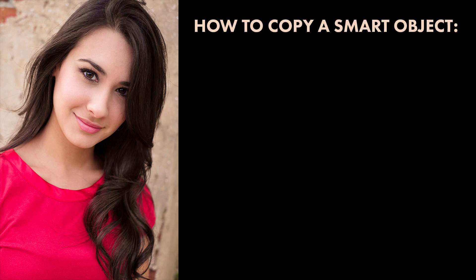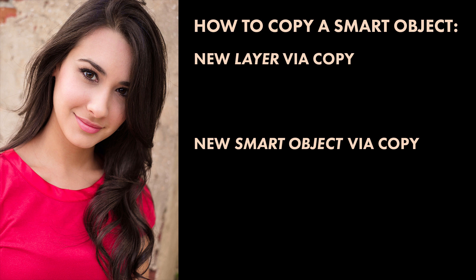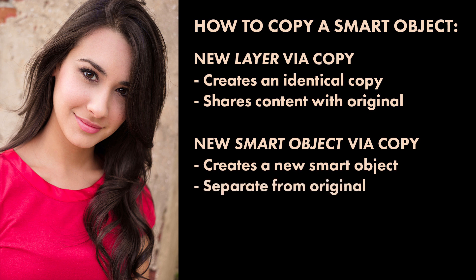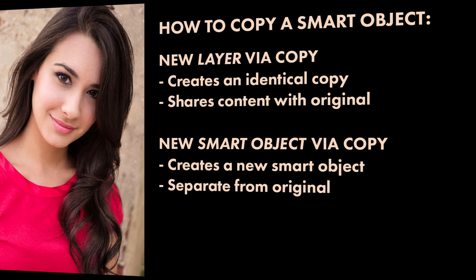Both ways for copying a Smart Object are found under the Layer menu in the Menu Bar. The first is by choosing the New Layer via Copy command, and the second is by choosing New Smart Object via Copy. One of these commands will create an identical copy of your Smart Object that shares the same content as the original, and the other will create an entirely separate copy that's completely independent of the original. If you don't know the difference between them, you can get confusing and unexpected results. So let's see how they work.